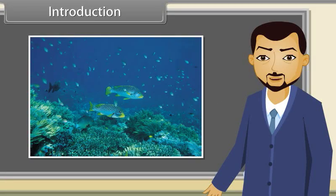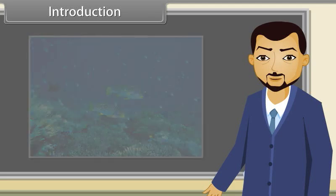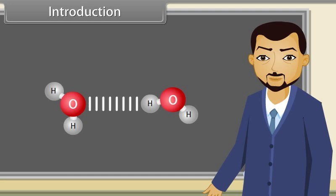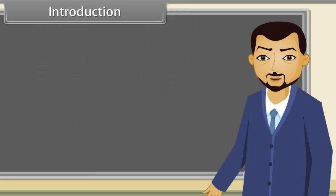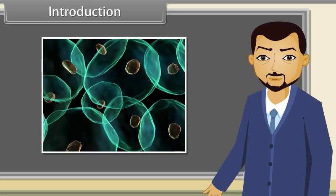Life depends upon hydrogen bonding. Life is created from water and water is a liquid due to hydrogen bonding in its molecules. If there is no hydrogen bonding, then water must be a gas just like air. There would be no oceans, no lakes and no rivers. The fluids in cells of living bodies also exist due to hydrogen bonding. So all the living systems depend upon hydrogen bonding.